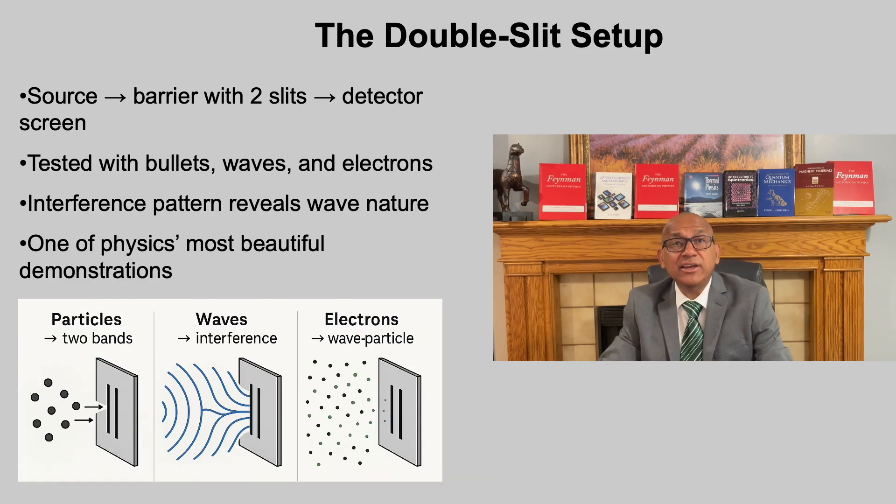To build more confidence in the idea of dual nature, let us look at one of the most famous experiments in physics, the double-slit experiment. This setup is deceptively simple. A source aimed at a barrier with two narrow slits and a detector screen placed behind it. First, imagine firing bullets. As expected, they behave like particles, leaving two sharp bands on the screen directly behind the slits. Next, think of waves like water or light. The waves pass through both slits, overlap and interfere. This produces a series of bright and dark bands, an interference pattern across the detector.